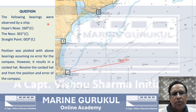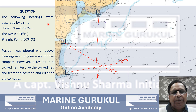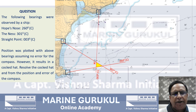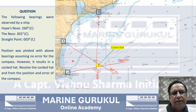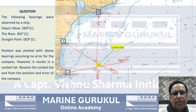The first bearing is from Hope's Nose, the second from The Ness, and the third from Straight Point. These compass bearings do not intersect at one point — their intersection results in a triangle shaded in yellow. This triangle is called the cocked hat. The concept of the terrestrial cocked hat should now be clear. For ease of discussion, these points are marked as Alpha (A), Bravo (B), and Charlie (C).